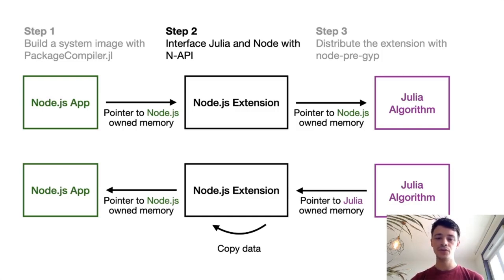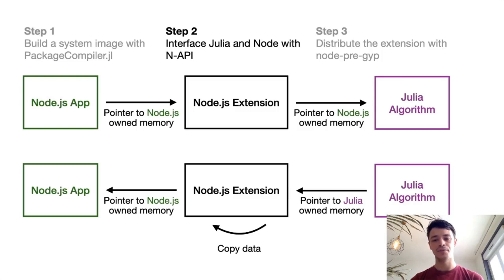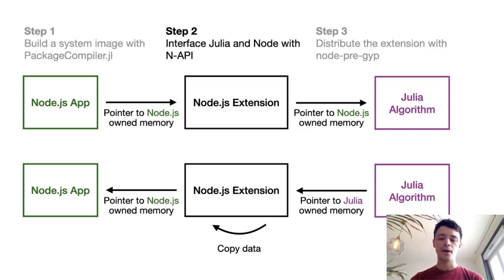You need to pay attention to memory ownership. If you give your Julia algorithm some memory owned by Node.js, there is no problem because the Node garbage collector will not free the memory while it is being used by the Julia algorithm. On the other hand, if your Julia algorithm returns a pointer to memory it has allocated — for example an array, a vector, or a matrix — you need to copy the data before returning it to the Node.js runtime, because the Julia garbage collector has no knowledge of the Node.js application and may free the memory at any point in time.